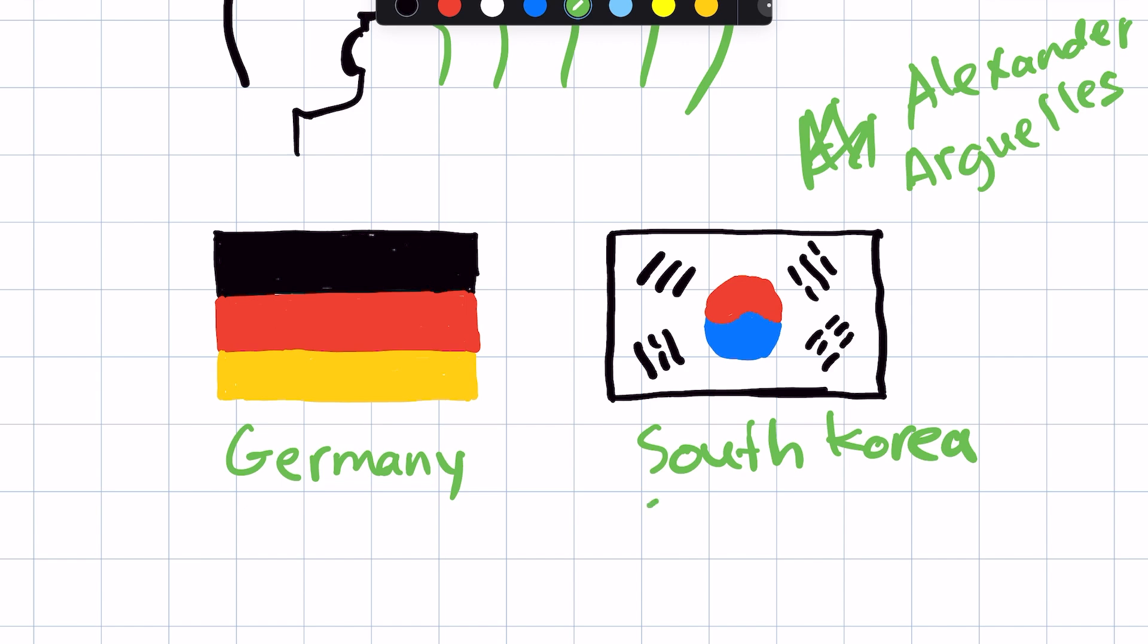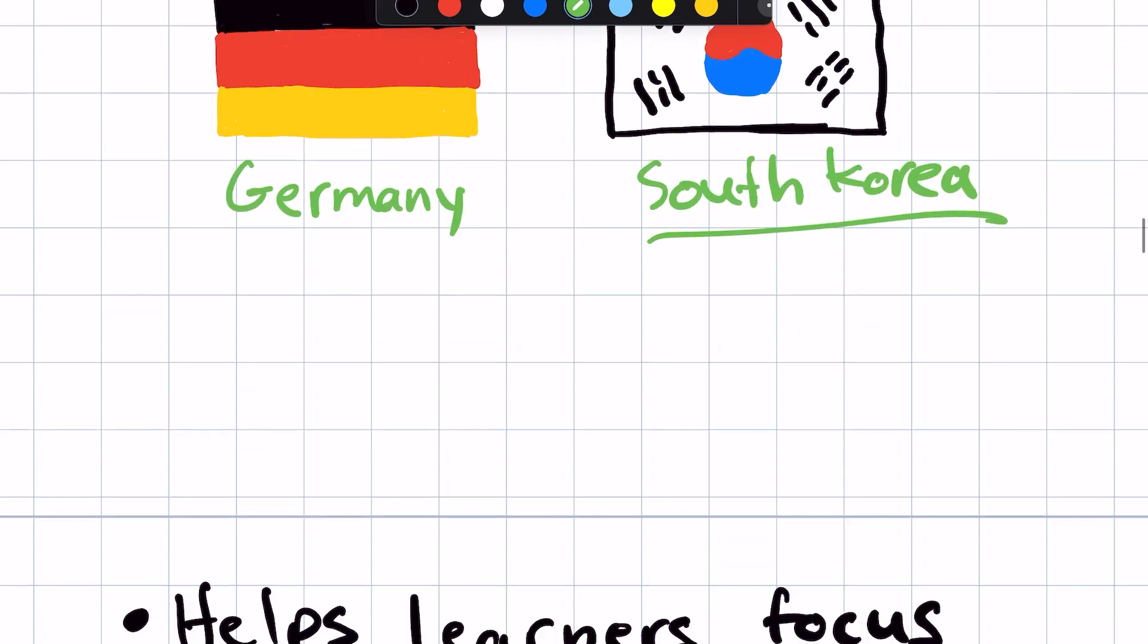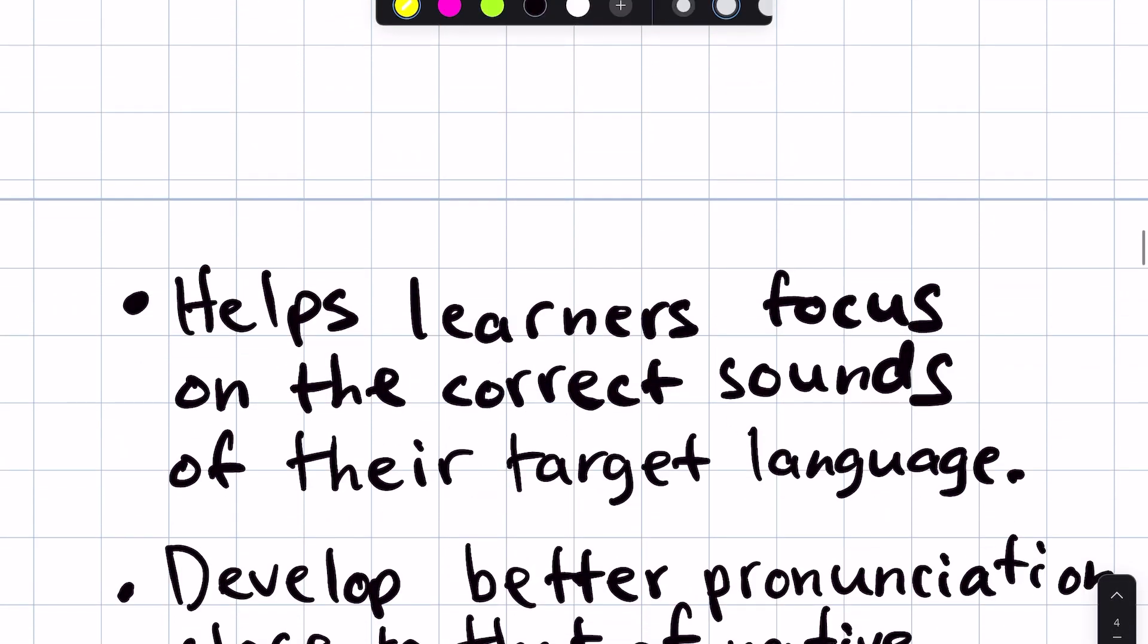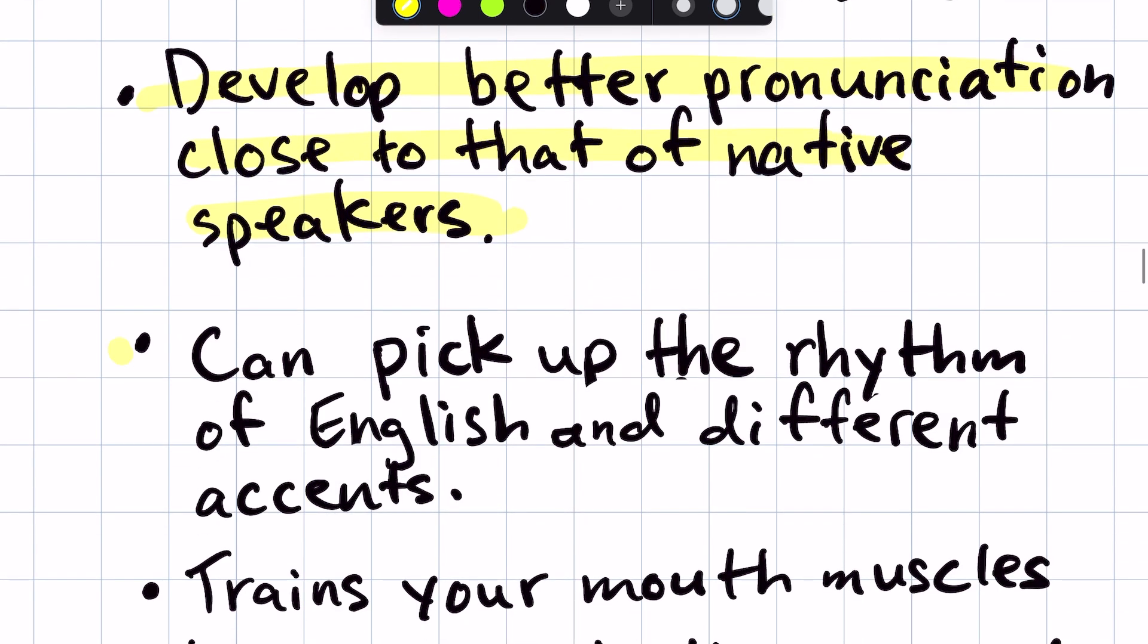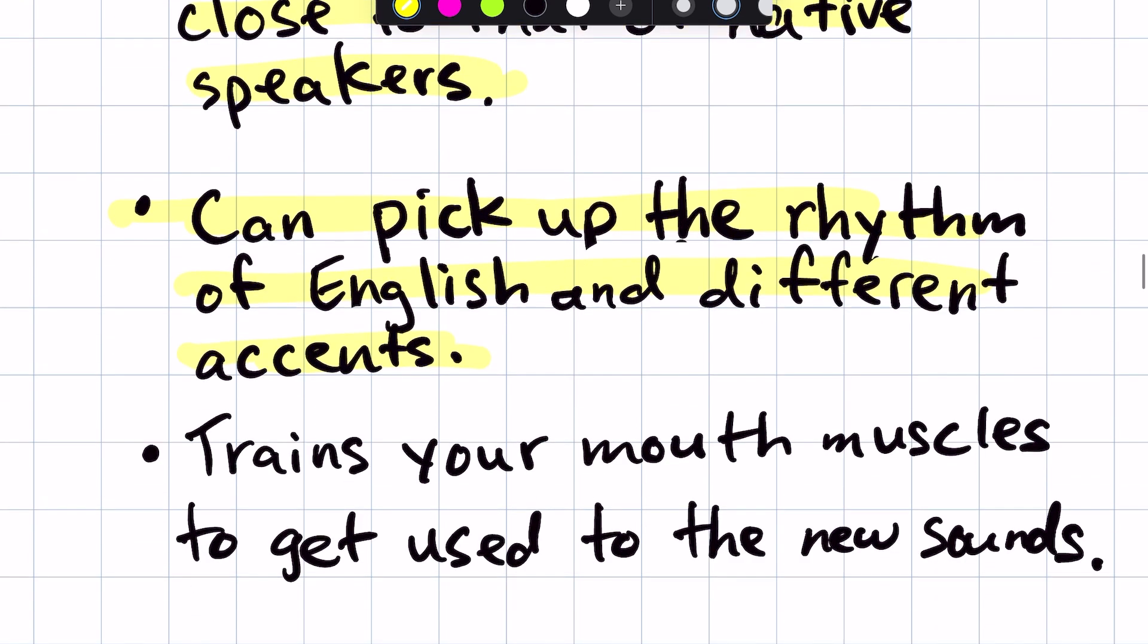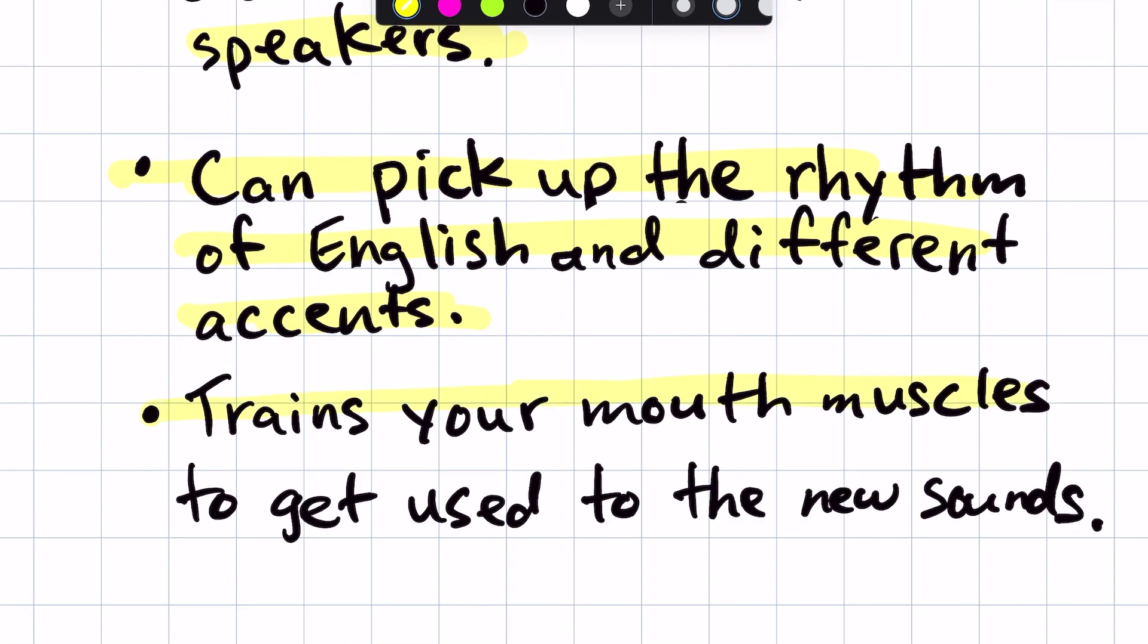And so he's very famous for working on the South Korean language. And so what he believed was shadowing helps learners focus on the correct sounds of their target language. And it can help you develop better pronunciation close to that of native speakers. And you can pick up the rhythm of English and different accents. And it trains your mouth muscles to get used to the new sounds.